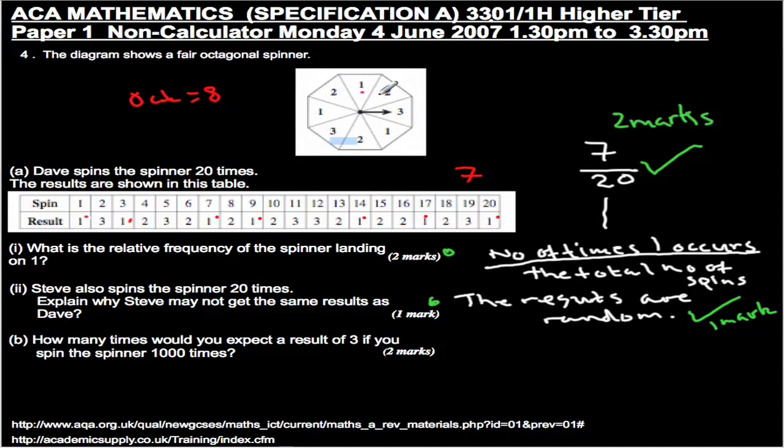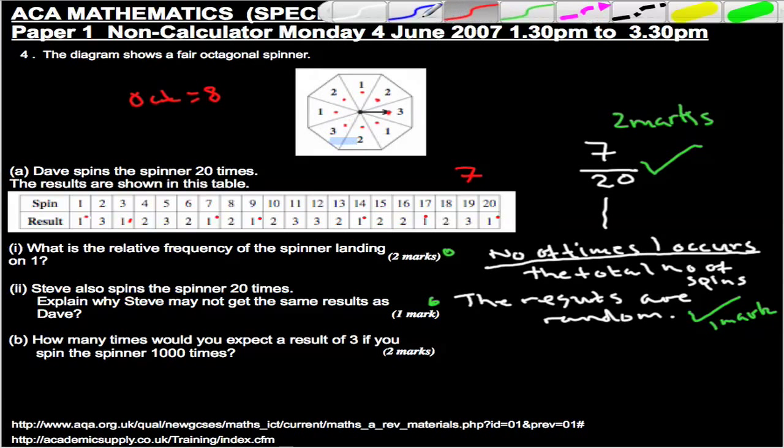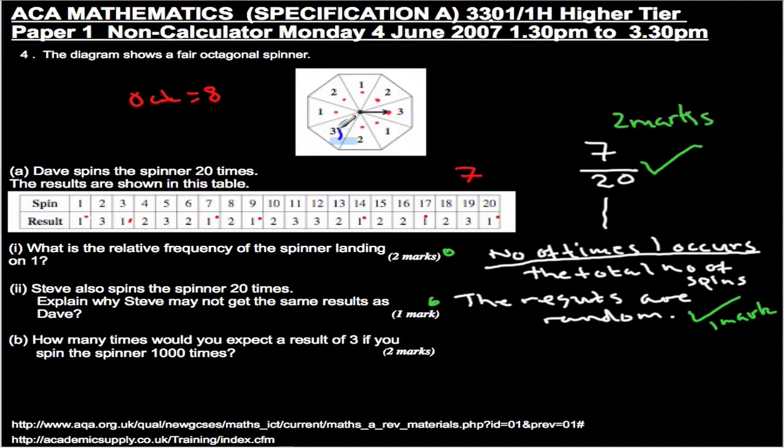We've got 1, 2, 3, 4, 5, 6, 7, 8. 8 total possibilities. And of those possibilities, we have 1, 3 there and 1, 3 there. So we've got 2 possibilities out of 8.